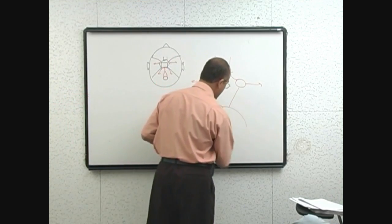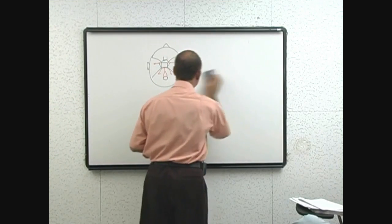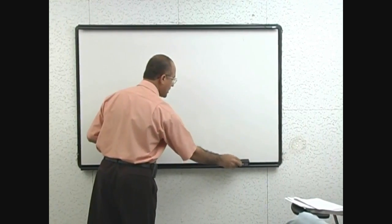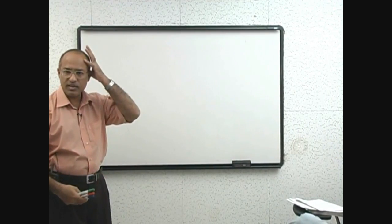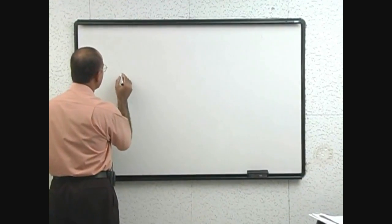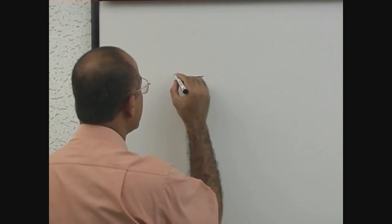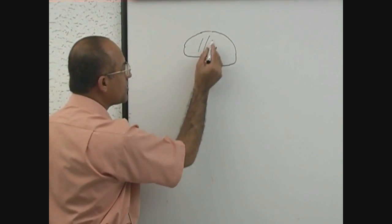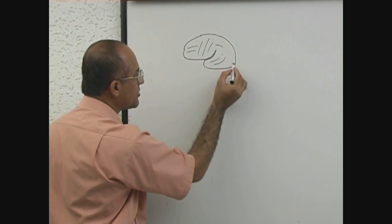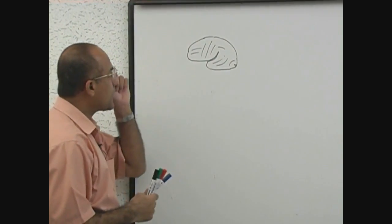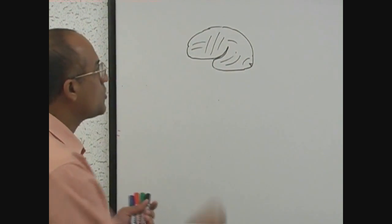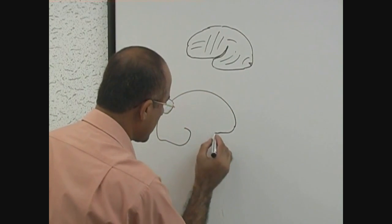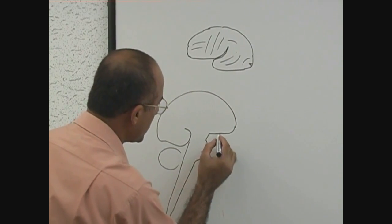Now we come to what areas of the cerebral hemispheres are supplied by the anterior cerebral artery, middle cerebral artery, and posterior cerebral artery. First I will show you the supralateral surface of the hemisphere. We have to see the blood supply over the cerebral hemisphere — the supralateral area plus the medial area.